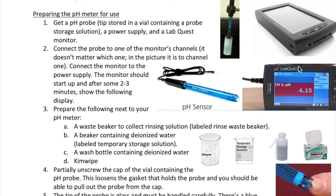It takes 2 to 3 minutes to actually get started. But eventually, you'll see a screen as shown here. In this case, the pH probe is connected to channel 1. So the display shows that in channel 1, you're measuring pH and the value of that pH is 4.15.